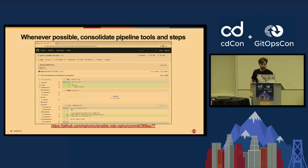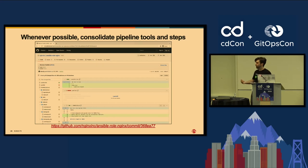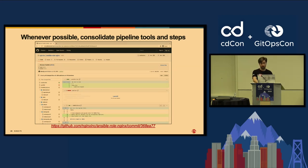The next lesson — which you develop over time — is to consolidate pipeline tools and steps whenever possible. To do this properly, you have to keep actively checking for updates in the tools you're using. For example, Ansible Lint added YAML Lint as a dependency and started running it natively, which meant I could remove a separate YAML Lint step from my workflows. It's not a huge time saving on its own, but these little changes add up over time.